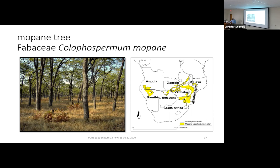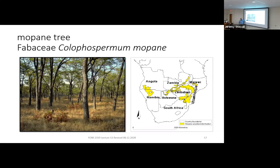Next up is the Mopane tree — sometimes called Mopani — Fabaceae Colophospermum mopane. Its range covers an area much like parts of central Texas that doesn't get much rainfall, so it naturally forms open woodlands. These trees may be 30 to 40 feet tall, and when the woodlands are particularly impressive, they're called Cathedral Mopane.